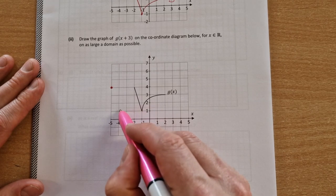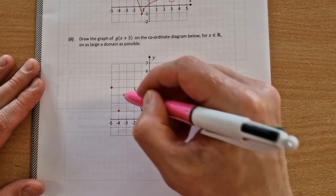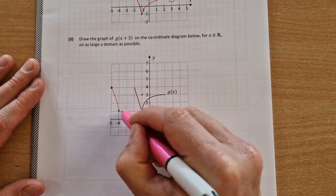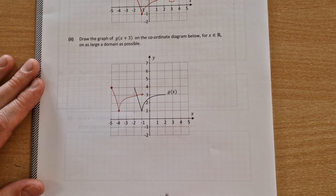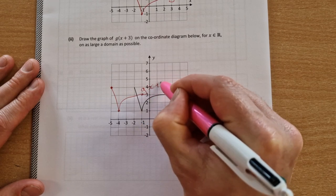That will move 1, 2, 3, and that will move 1, 2, 3. And now you join your dots again like this, and you get your function there. That is the g of x plus 3.